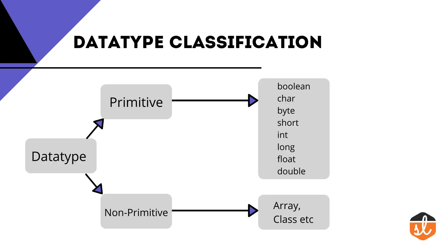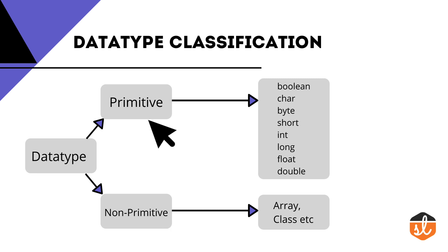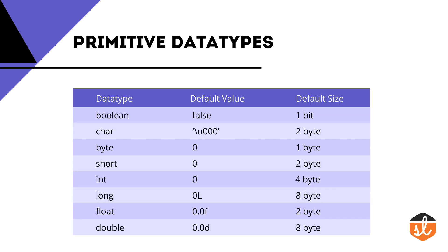Now let's discuss data type classification. There are two types: first is primitive and second is non-primitive. For primitive data types there are eight types: boolean, character, byte, short, int, long, float, and double. For non-primitive data types, we have arrays, classes, and others, which we will discuss in further sessions.